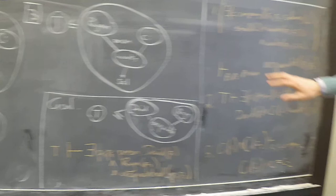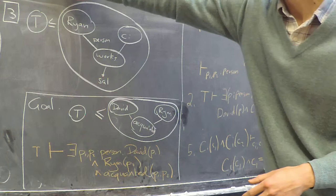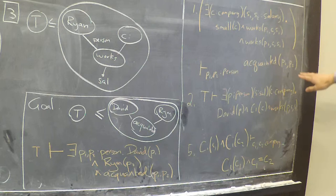And just so you can see how this compares to the text-based formalism, we have written the comparison text statements in orange here. So for example this axiom 1 which says that if two people work in the small company then they are acquainted.